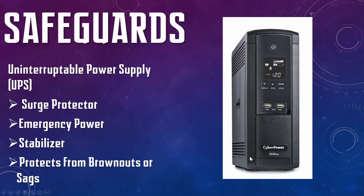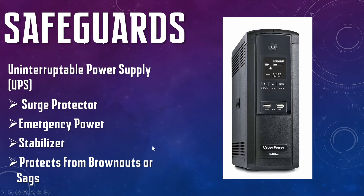This is a power regulator — an uninterruptible power supply, or UPS. There's a brand called APC. Basically, this is a box with a bunch of batteries in it. It has power plugs on the back, and you plug your computer into this, so your computer is not plugged directly into the wall — it's plugged into this, and this charges its batteries via the wall.